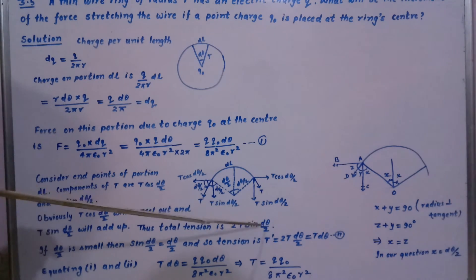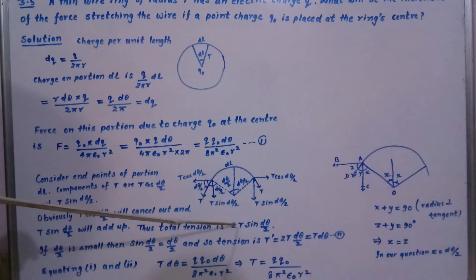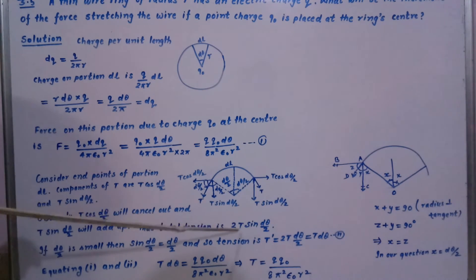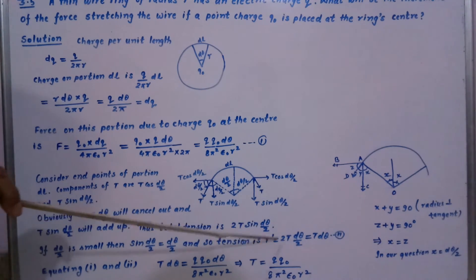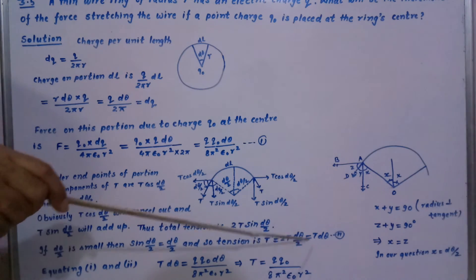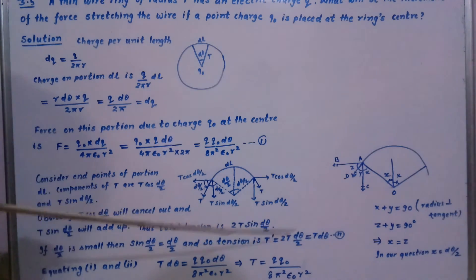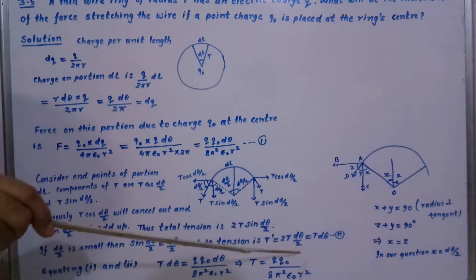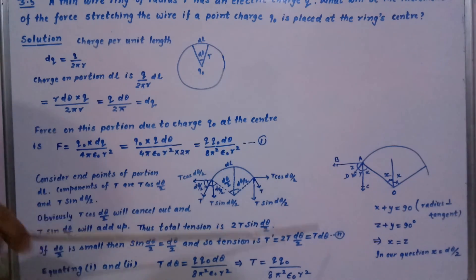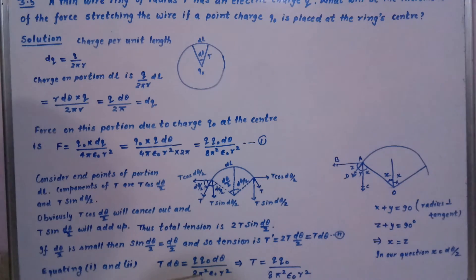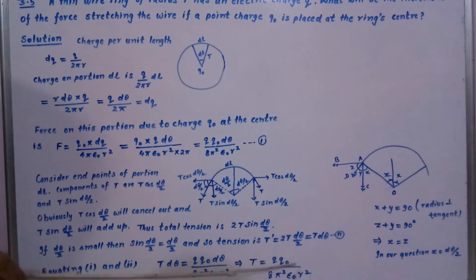For small angle, sin(dθ/2) ≈ dθ/2, so the total tension becomes 2T × dθ/2 = T dθ. Equating equation 1 and equation 2: T dθ = Q Q0 dθ / (8π² ε₀ R²). The dθ terms cancel, giving T = Q Q0 / (8π² ε₀ R²).